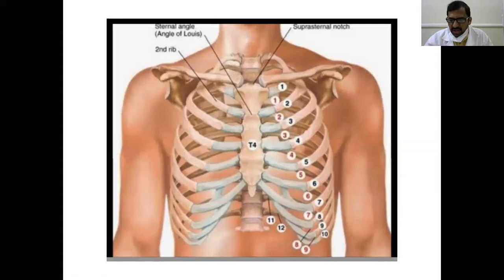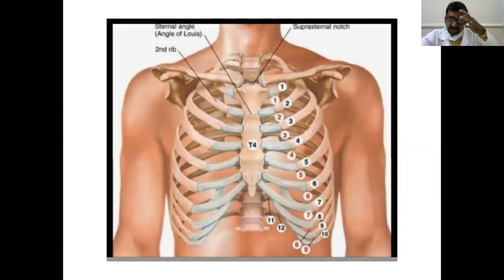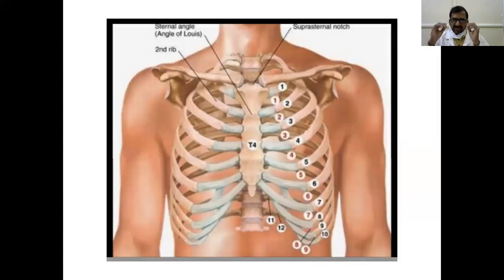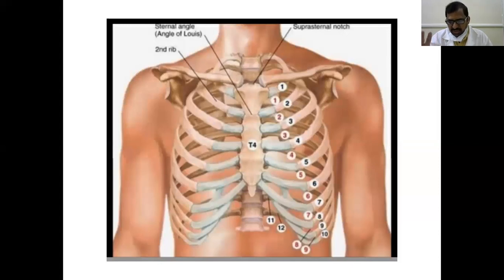Another important landmark you have to identify is the sternal angle. It is the angle between the manubrium sternum and the body of the sternum, also called the angle of Louis. This is a cartilaginous joint — the manubriosternal joint. The sternal angle is very, very important clinically because there are many events taking place at this level. There are 10 events occurring at the level of the sternal angle that you are supposed to know.